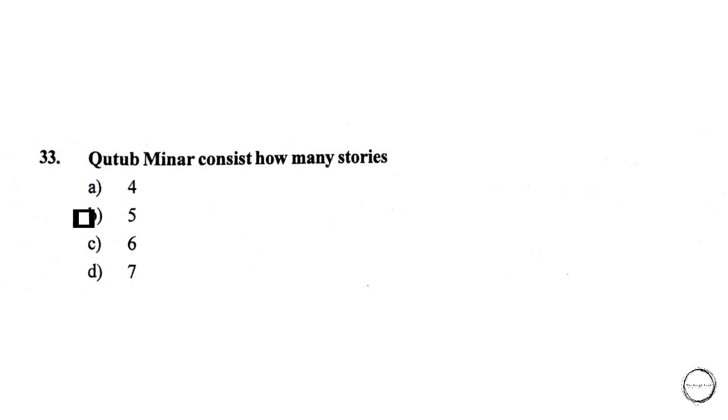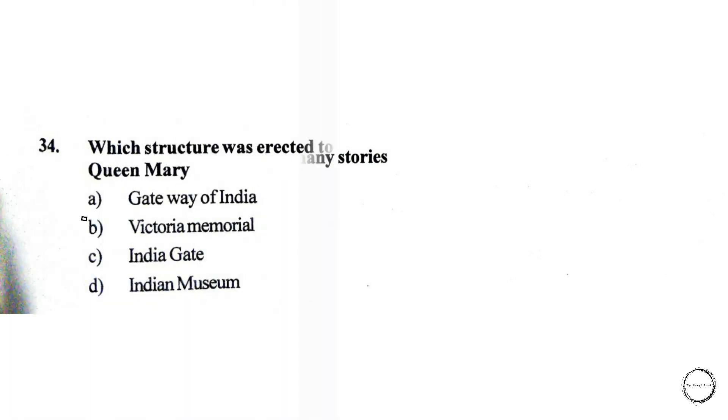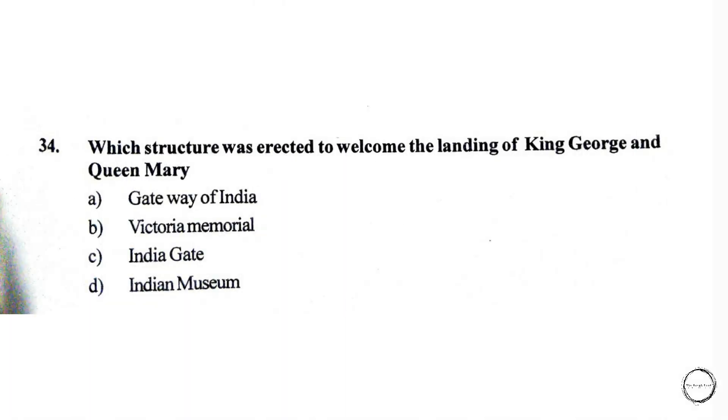Moving on, Qutub Minar consists of how many stories? Options are: A) 4, B) 5, C) 6, D) 7. The right answer is option B, 5.